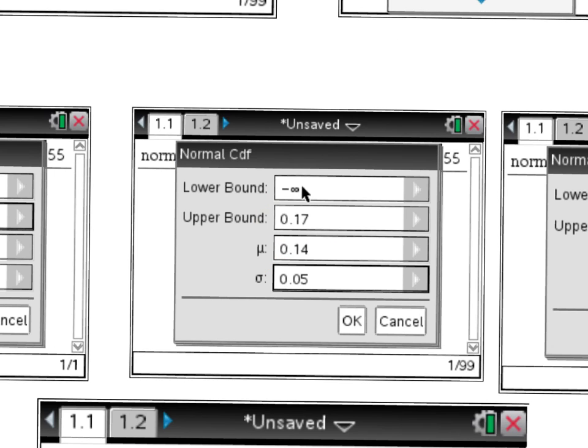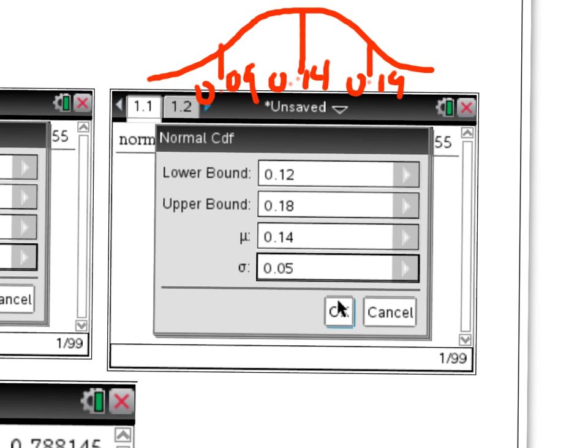For the problem involved being less than 0.17, I would draw a similar bell curve, where my mean was 0.14, and my standard deviation was 0.05. So now in this case, I want to go to the left of 0.17, so that would be about there, and I'm going to shade to the left. So again, my lower bound in this case would be all the way to the left, so we put negative infinity, I'll put the negative sign, go to the Pi button, find the infinity, up to 0.17, and I keep the mean and standard deviation all the same.